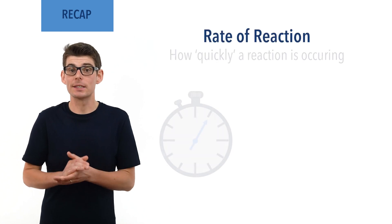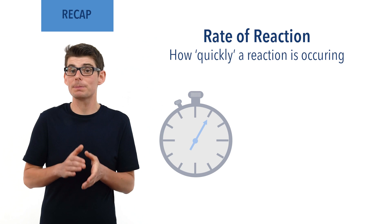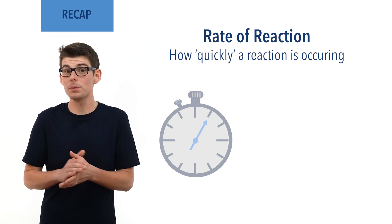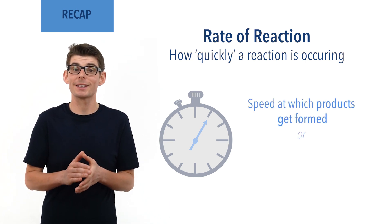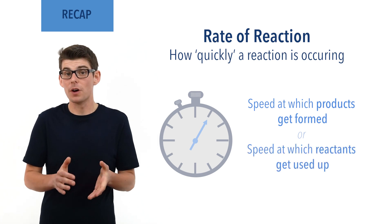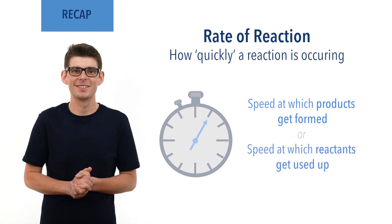Before we talk in detail about equilibrium there are a couple of ideas you need to be comfortable with. The rate of the reaction refers to how quickly it is occurring. This can be considered as either the speed at which the products get formed in the reaction or the speed at which the reactants get used up. Faster rate of reaction means quicker reaction. Recap done? Let's go.